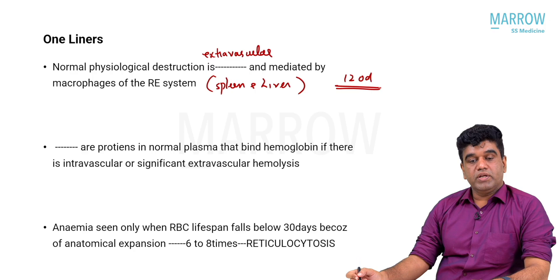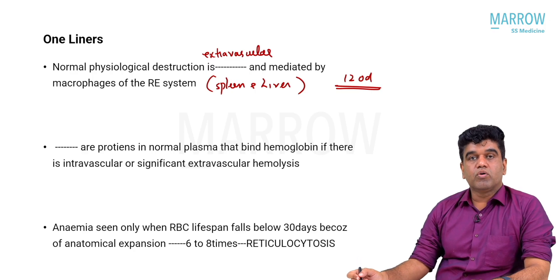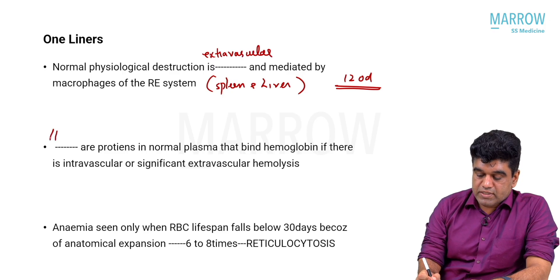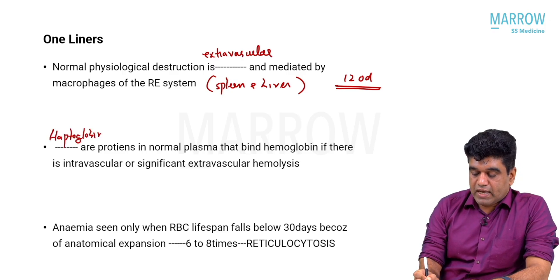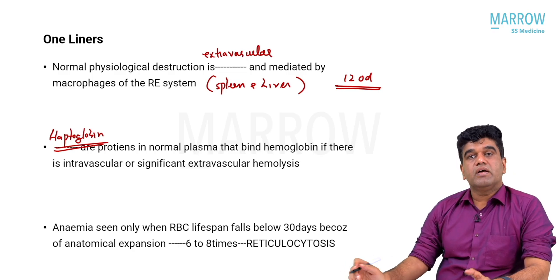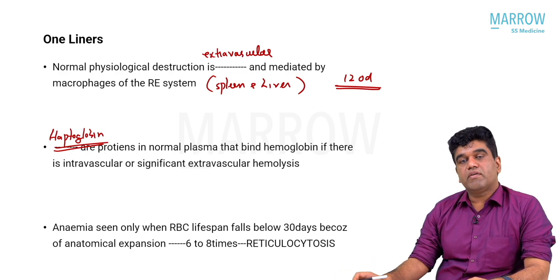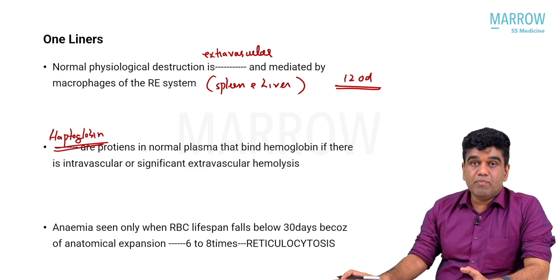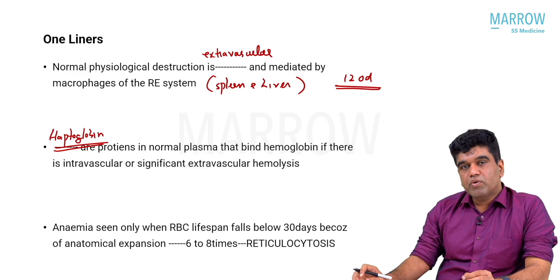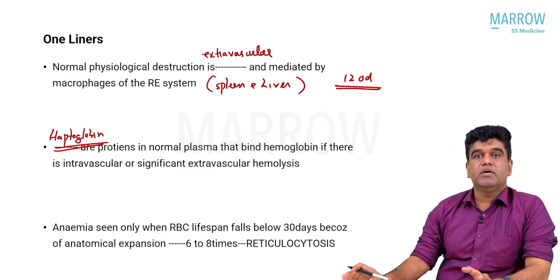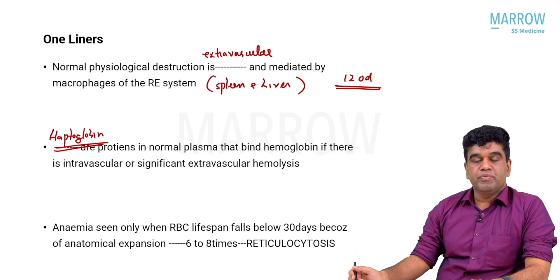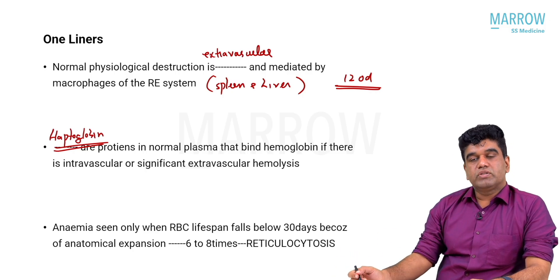The protein in normal plasma that binds hemoglobin if there is intravascular or significant extravascular hemolysis is haptoglobin. Haptoglobin binds to hemoglobin whenever there is hemolysis. When there is any amount of intravascular hemolysis, haptoglobin will bind to the hemoglobin. With normal extravascular hemolysis it does not happen that way — only if there is an excess amount of extravascular hemolysis will haptoglobin bind.